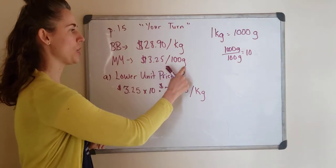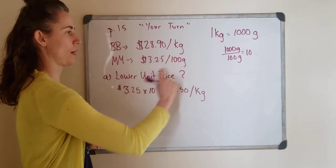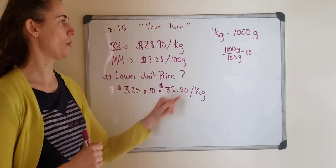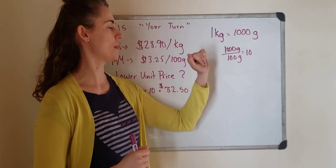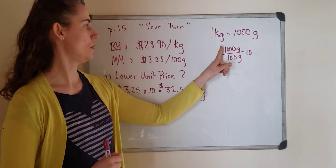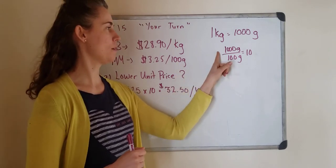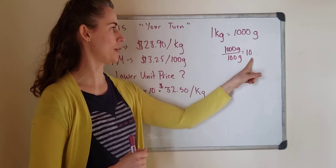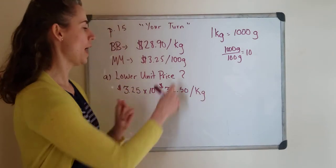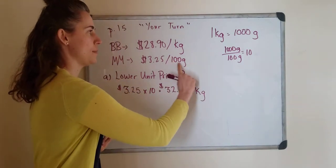Now if I want to change the 100 grams to kilograms, we know that one kilogram is a thousand grams. So how many 100 grams are in a thousand grams? A thousand divided by 100 is ten. I would need ten of these to make up one kilogram.